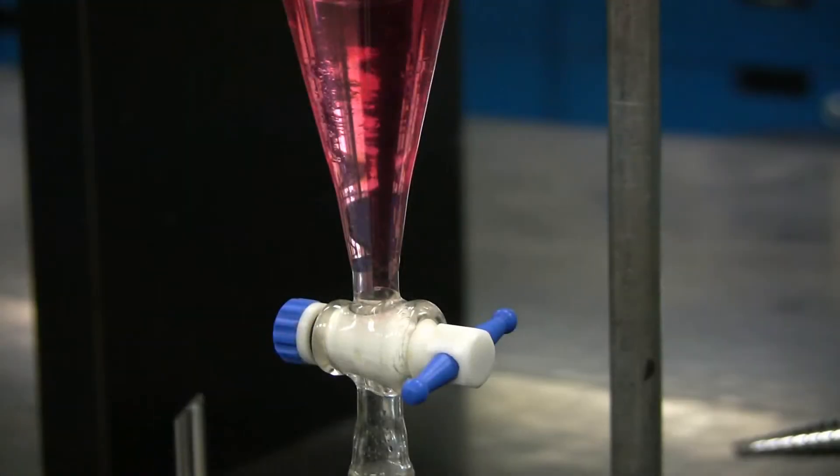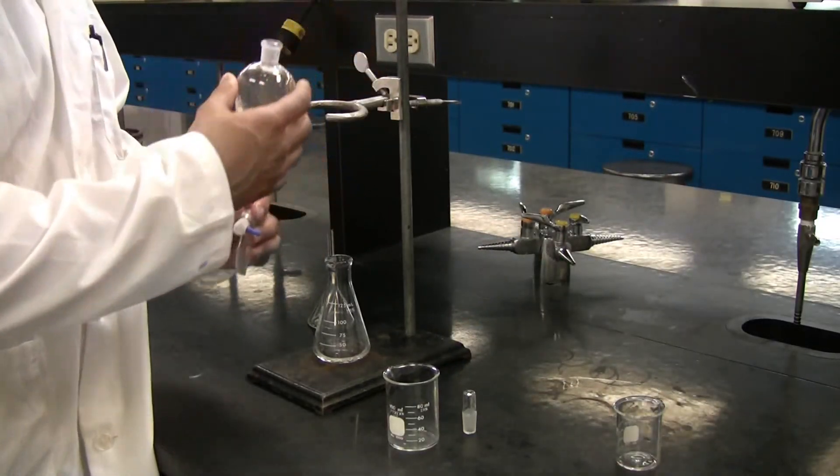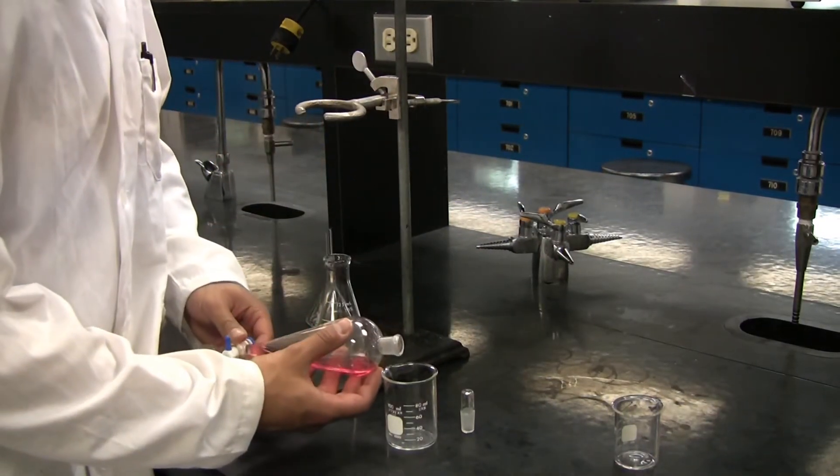When you're close, it should look something like this. Drain the second layer out of the top of the separatory funnel into a separate, clean beaker.